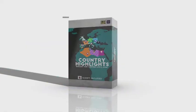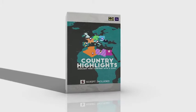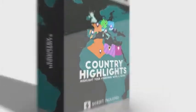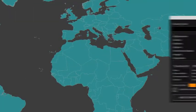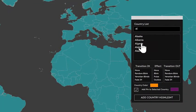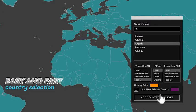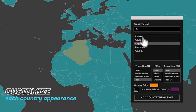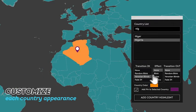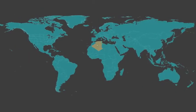The final product is a very useful tool when you need to highlight countries in the world. Country Highlights is made by a project file and a script. Using it is very fast and easy — simply run it and type any country you want to highlight, then set the highlight color, the reveal, and the animation mode.